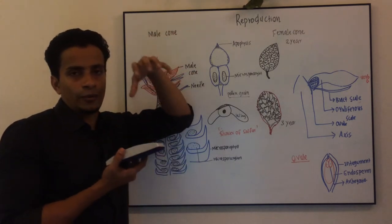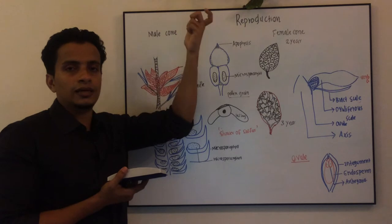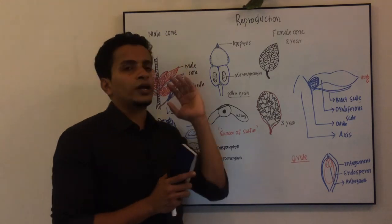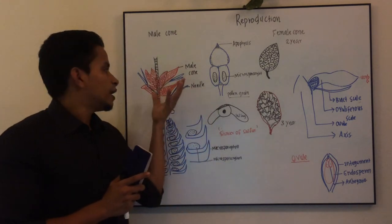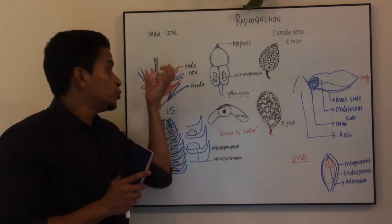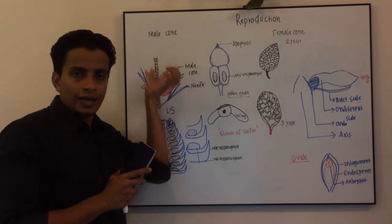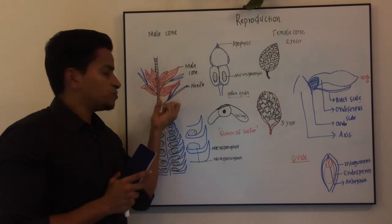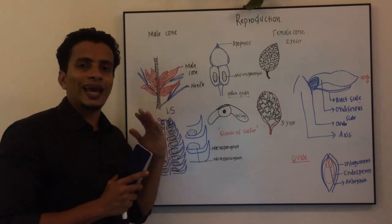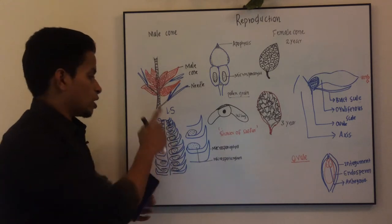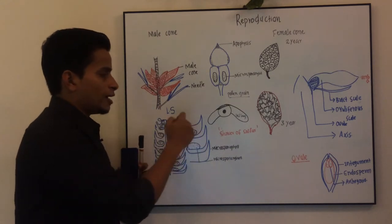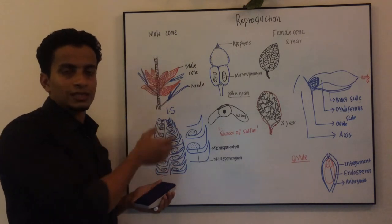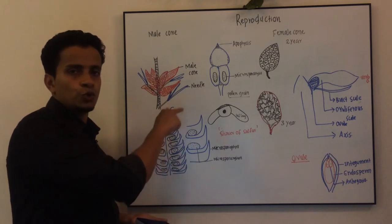The details of the male cone are similar to Cycas. As reproductive structures mature, vegetative growth is arrested. The male cone is an aggregated version of microsporophylls arranged on an axis. Looking at the structure, you can see an axis with microsporophylls arranged around it.